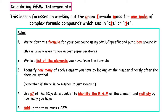Remember, this formula is usually given to you in past paper questions. Rule two: we write a list of all the elements that we have in the formula. And three: we identify how many of each element we have by looking at the number directly after the chemical symbol. Remember, if there's no number, that just means we have one. We then use page 7 of the SQA data booklet to identify the relative atomic mass of the element and multiply it by how many of that element you have. The last step is to add up the total mass, which is equal to the gram formula mass, or GFM.